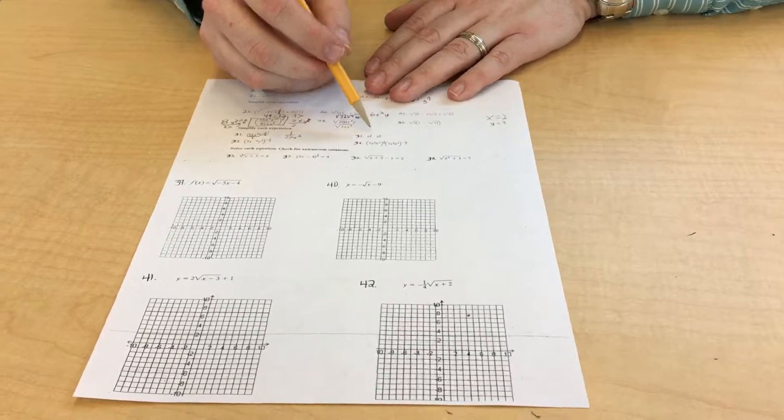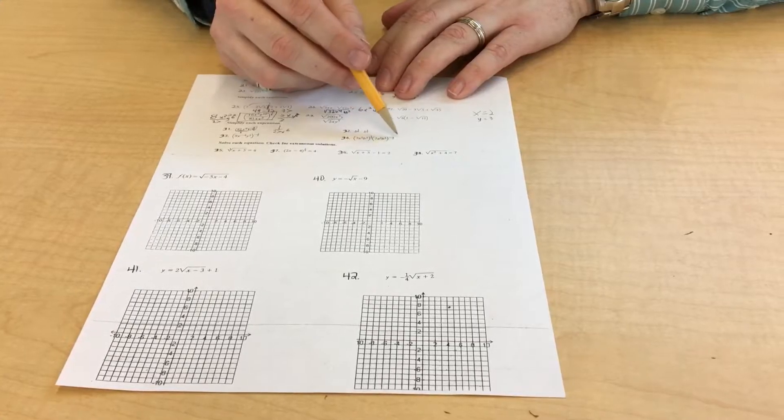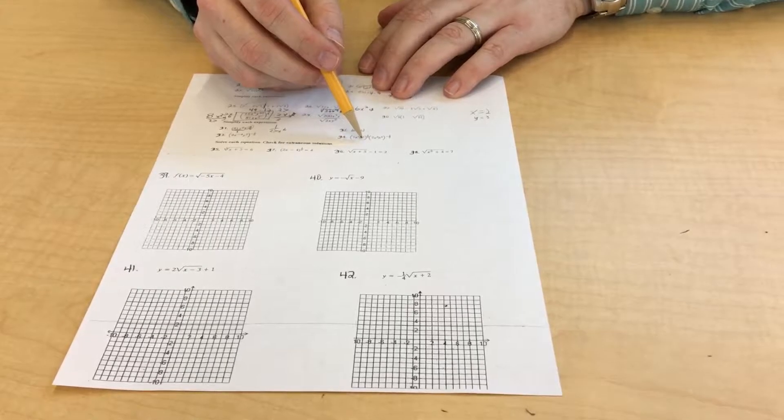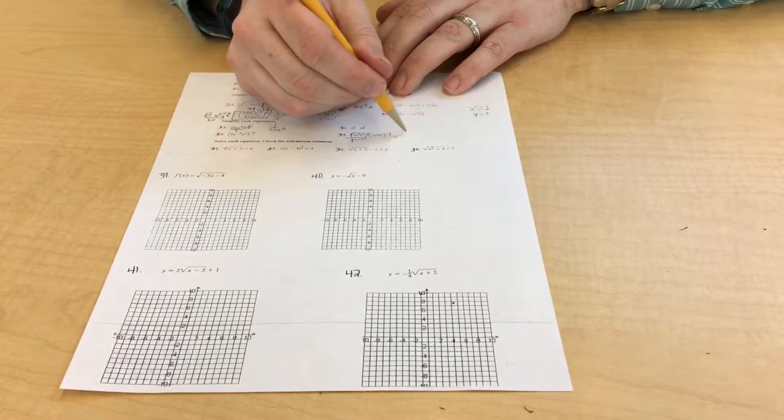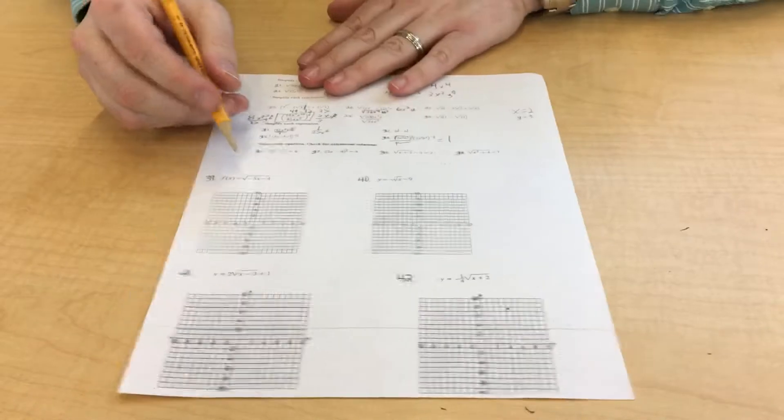When you're multiplying, you add the exponents. This one's silly. It's a 1/2 on the top and the exact same thing, the square root on the bottom. So square root of this on top of square root of the exact same thing on the bottom. It's 1. Don't overwork yourself.